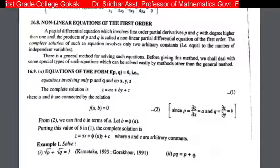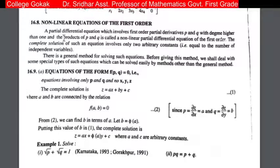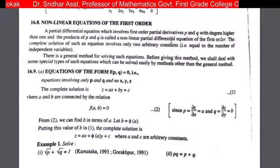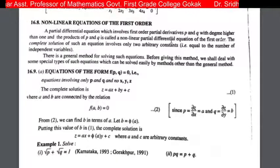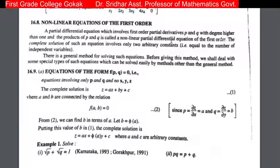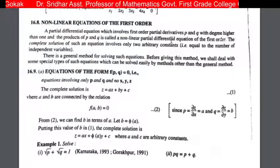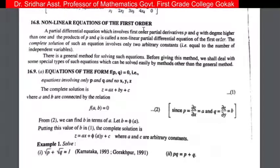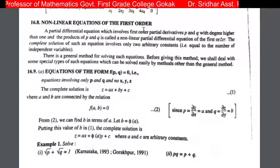A partial differential equation which involves first order partial derivatives — that is, only dou z by dou x or dou z by dou y — these are called first order derivatives. Second order means dou square z by dou x square, dou square z by dou y square, dou square z by dou x dou y. Third order partial derivatives are dou cube z by dou x cube, dou cube z by dou y cube.